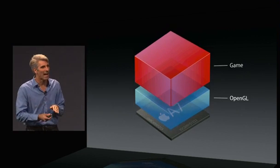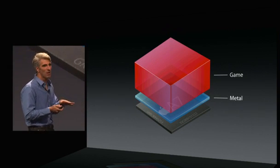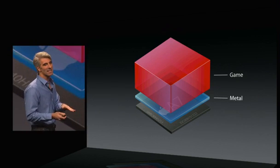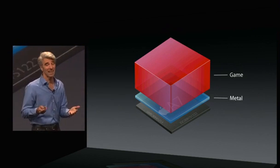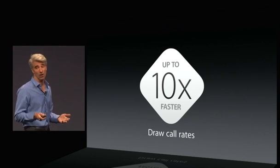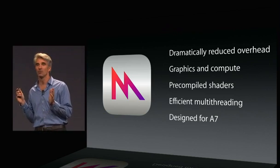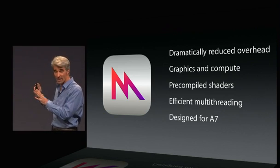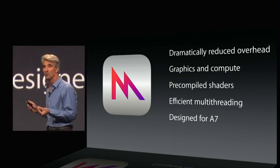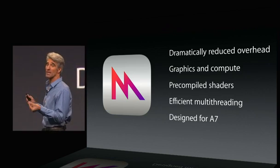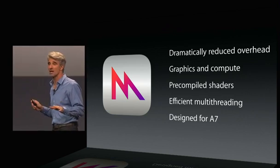Now we have Metal, and Metal dramatically reduces that overhead, giving the game near bare-to-the-Metal access to the power of A7. The results are stunning — up to 10x faster draw call rates. In addition to these dramatically reduced overheads, you get access not just to graphics, but to the compute power of the GPU. Metal supports pre-compiled shaders and efficient multi-threading, so you can always get the most out of the processor.